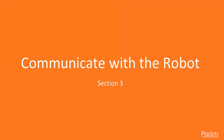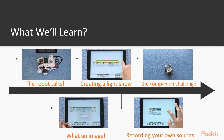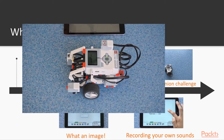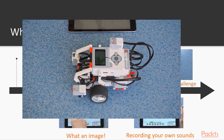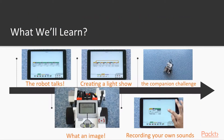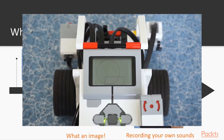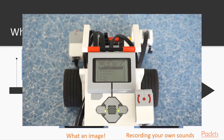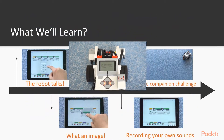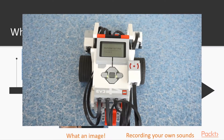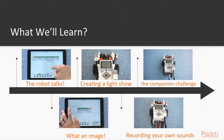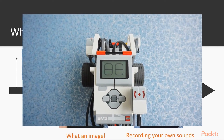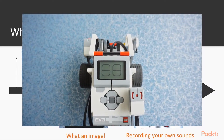Section 3: Robot Communications. In this section, we will first take a look at how to play different notes and sounds with the robot. Then we are going to draw images and shapes on the robot's screen. After that, we are going to change the colors of the button backlights. Then we are going to record our own sounds and have the robot play them back. And last, we are going to conclude everything we've learned so far in one fun challenge: the companion challenge.